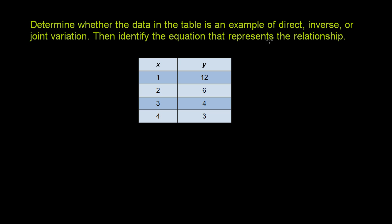Let's just think about what direct, inverse, or joint variation even means. If you have direct variation, so if y varies directly with x, it literally means that y is equal to some constant multiple of x. Or if you divide both sides by x, it means that y over x is equal to k.